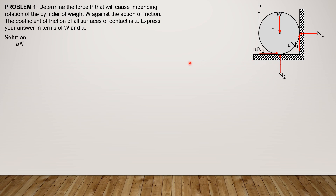Summation of forces in X equals 0: mu·N2 minus N1 equals 0, so mu·N2 equals N1. Multiplying both sides by mu gives mu²·N2 equals mu·N1. Then summation of forces in Y equals 0: N2 plus P plus mu·N1 minus W equals 0. Replacing mu·N1 with mu²·N2: N2 plus P plus mu²·N2 equals W.